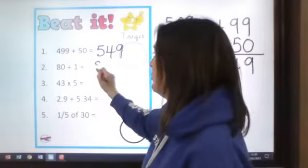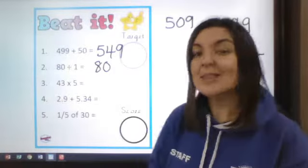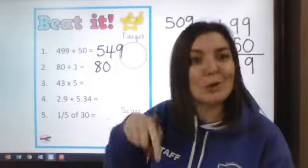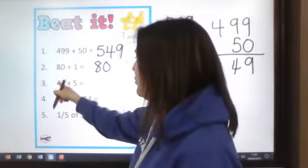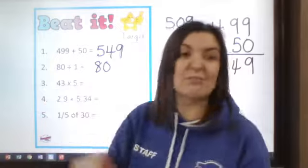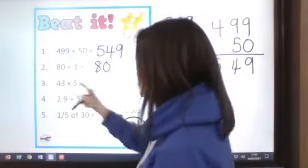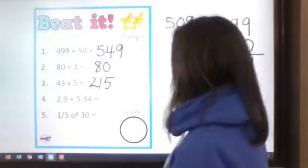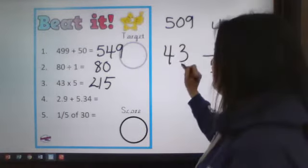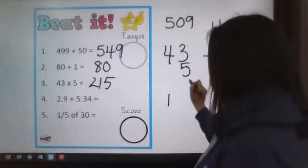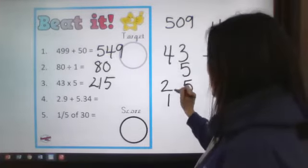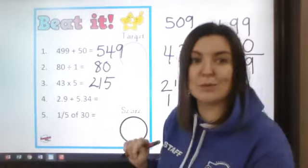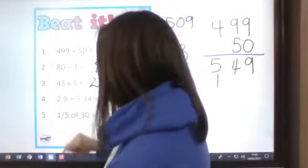80 divided by 1 would just be 80. For 43 multiplied by 5, you could have done 4 times 5 is 20, put your 0 back on - 200. Then 3 times 5 is 15. So 215 in your head. Either method is fine, but remember we are trying to practise those methods in our head.